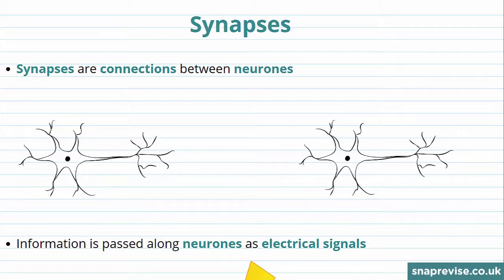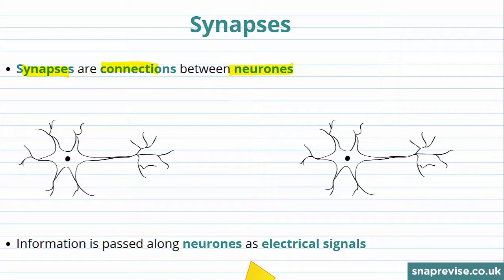We have things called neurons which make up nerves, and these have gaps between them. These gaps are called synapses. So synapses are connections between neurons — these two neurons are connected via a synapse.